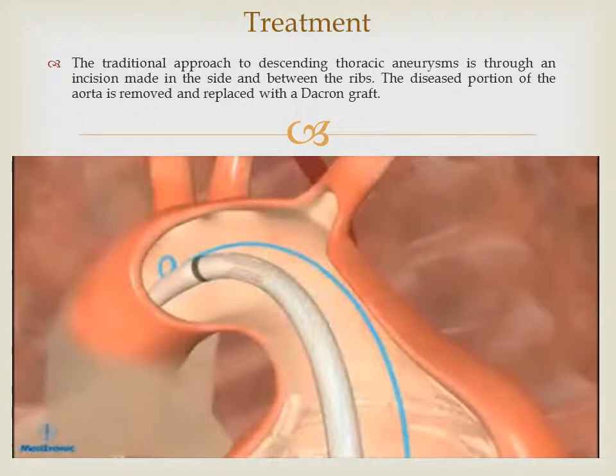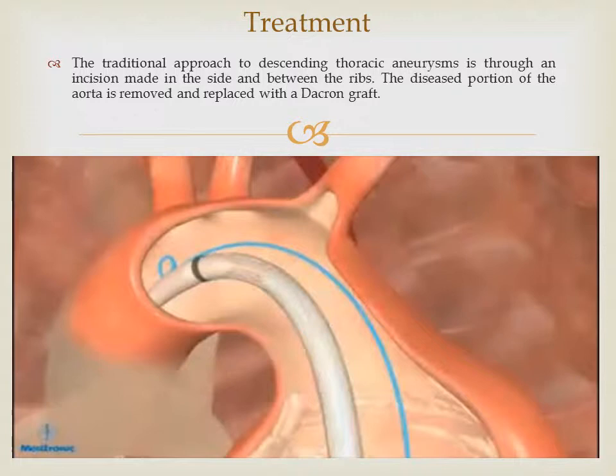Initially, position the proximal edge of the covered portion of the stent graft a few millimeters higher than the targeted landing zone. Confirm using angiography that the orientation and placement of the proximal end of the stent graft is exactly where you want it to land prior to deployment.